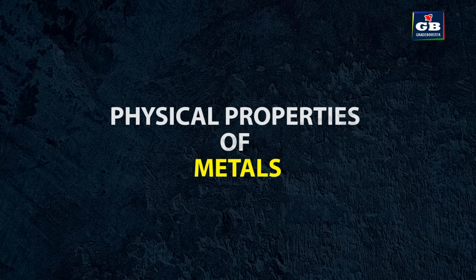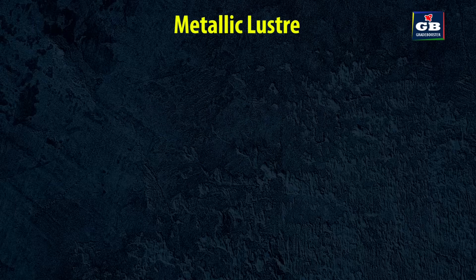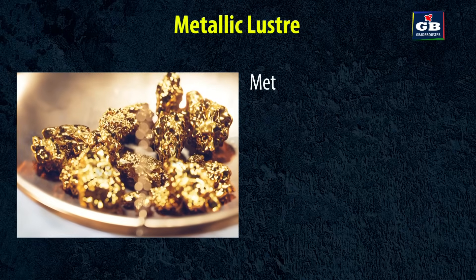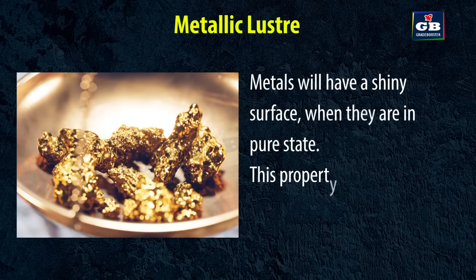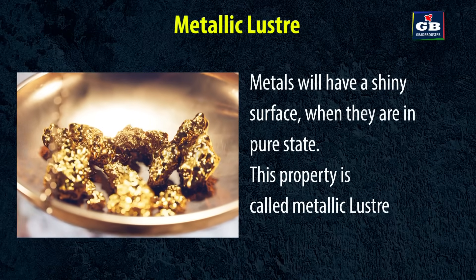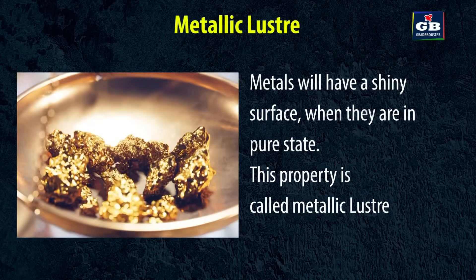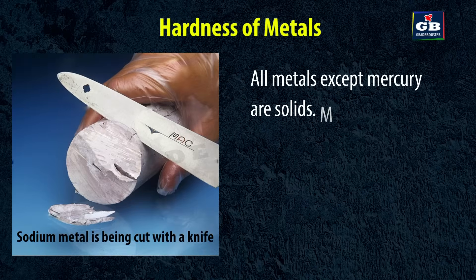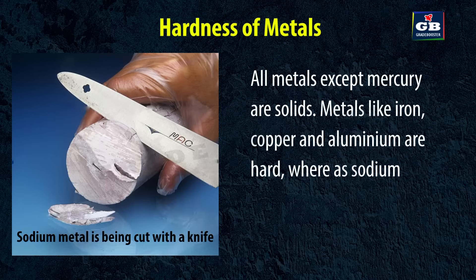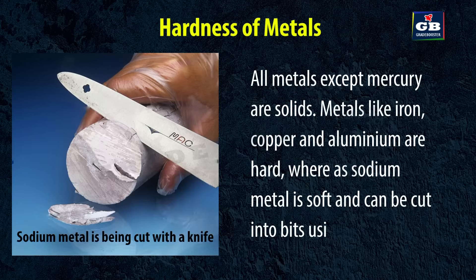Physical properties of metals. Metallic luster: metals will have a shiny surface when they are in a pure state. This property is called metallic luster. Hardness of metals: all metals except mercury are solids. Metals like iron, copper and aluminium are hard, whereas sodium metal is soft and can be cut into bits using a knife.